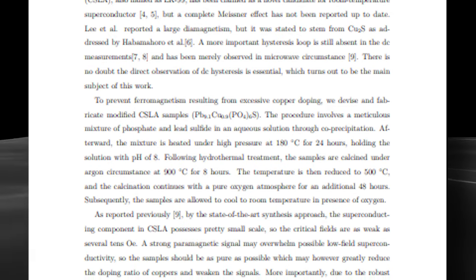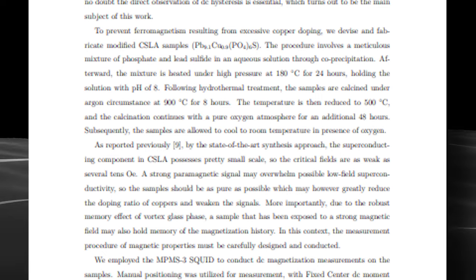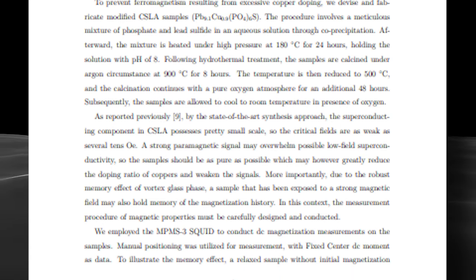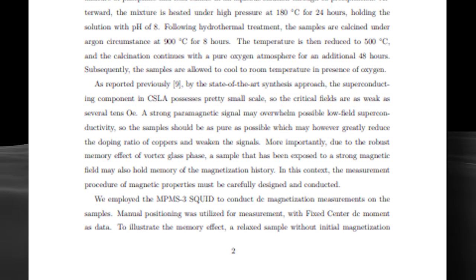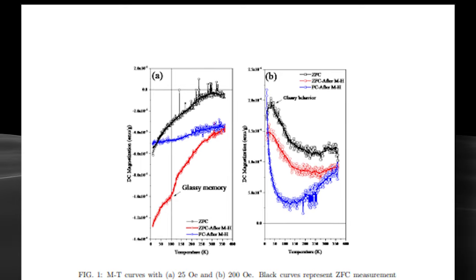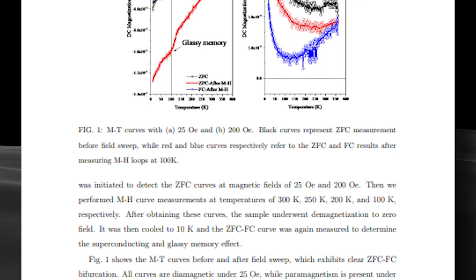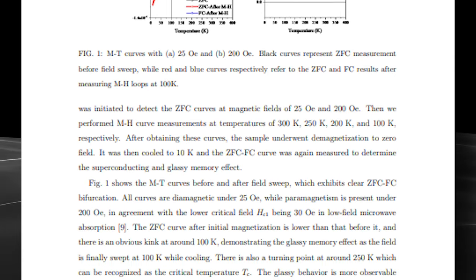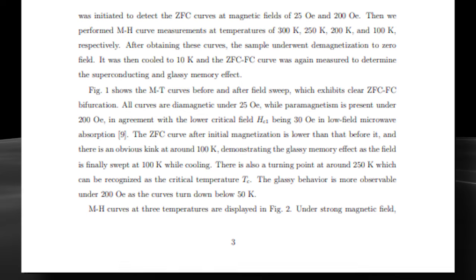The paper breaks down what qualifies a material as a superconductor, honing in on the Meissner Effect, perfect diamagnetism. They're eyeing LK-99, a copper-substituted lead apatite that could potentially be a room temperature superconductor. Previous studies missed the mark in proving this, but the paper spills the details on how they tweaked LK-99 to iron out unwanted magnetic quirks, and walks through the step-by-step experiments to check for superconducting properties.